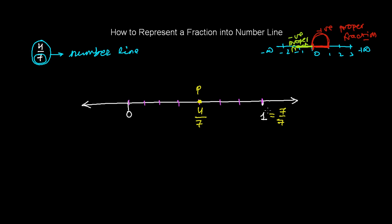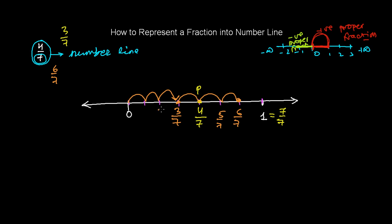Similarly, if the question asks to represent 3 over 7, just count 1, 2, 3 — that's the third point, which is 3 over 7. For 6 over 7, go to the sixth point: 3, 4, 5, 6 — that's 6 over 7. Likewise, this will be 5 over 7, this will be 2 over 7, and this will be 1 over 7. That's how you represent fractions with denominator 7 on the number line.